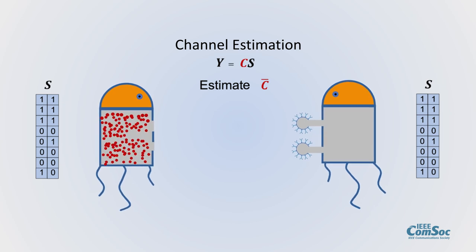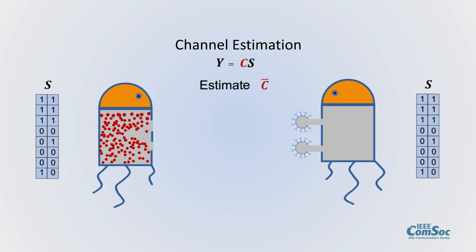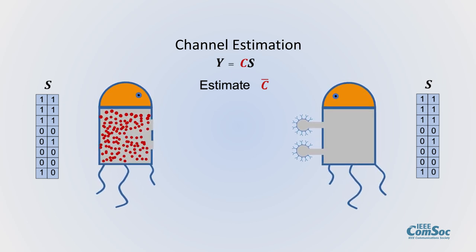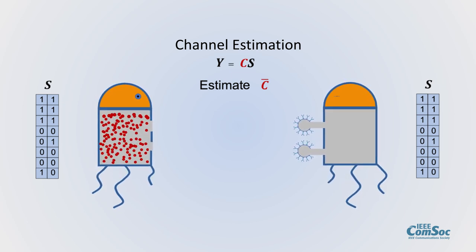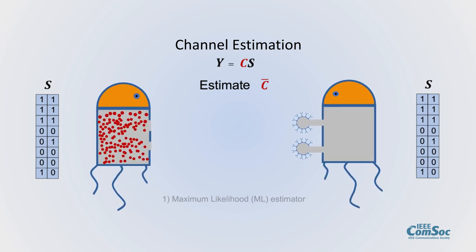The receiver also has an exact copy of the training sequence. Then the objective is to estimate the channel matrix C. Two solutions are proposed in the manuscript: first, maximum likelihood channel estimator which is optimal but computationally expensive.